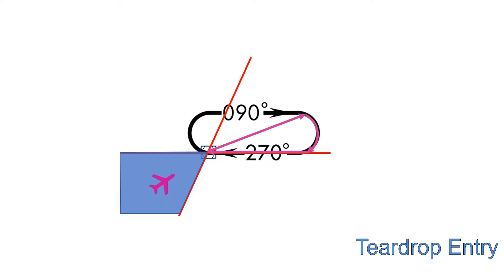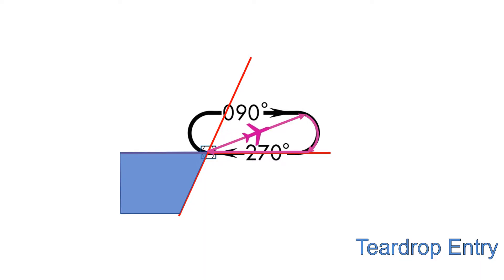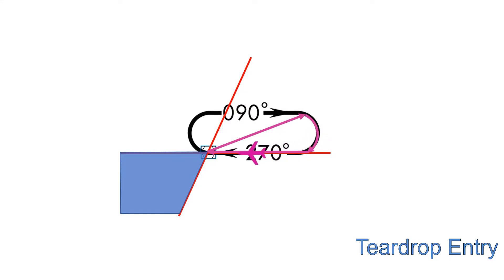The heading is 050, which puts us in the teardrop entry sector. Once over the VOR, the aircraft must be established onto a track of 30 degrees less than the outbound track of the hold — you should adjust this track for wind. This is then flown for one minute, adjusted by one second per knot of headwind or tailwind component. Once the time is up, the aircraft should be turned to establish onto the inbound track to the VOR, and then the normal hold procedures apply.